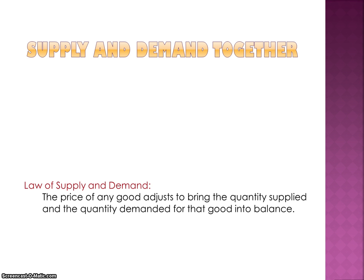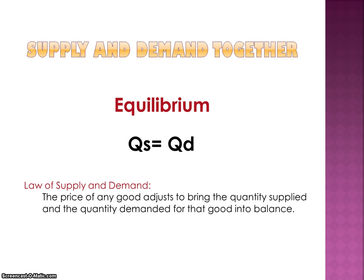When we put supply and demand together, the place where they meet is called the equilibrium. When the demand curve crosses the supply curve, that means that the quantity supplied equals the quantity demanded. That equilibrium is where the market is in balance and it's where the market wants to be — where the two curves cross is where the price and quantity will end up.